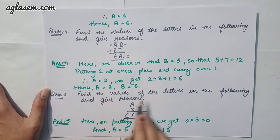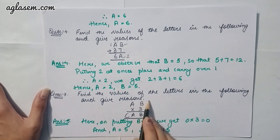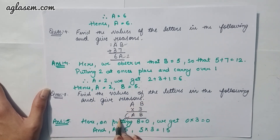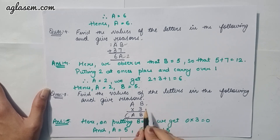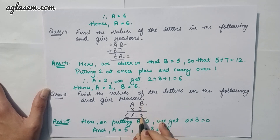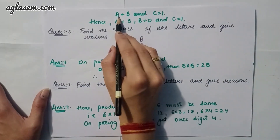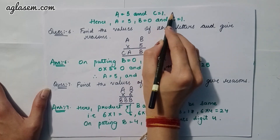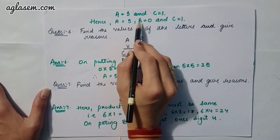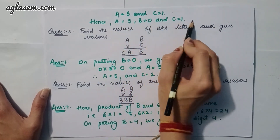Question 5: find the value of letters — AB × 3 = CAB. Putting B = 0: 3 × 0 = 0, so B = 0. Then A = 5, because 5 × 3 = 15, ones digit is 5 and carry 1. Therefore A = 5, B = 0, and C = 1.